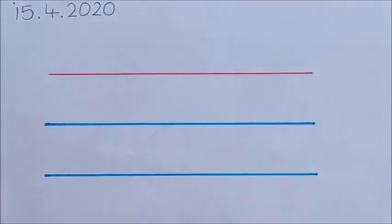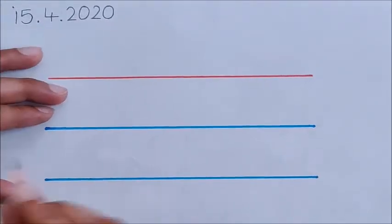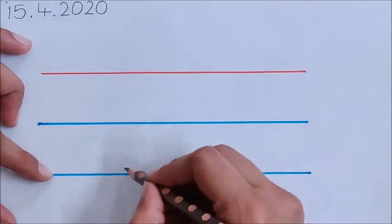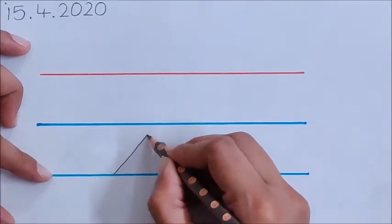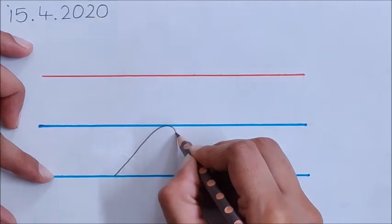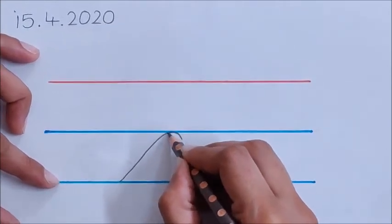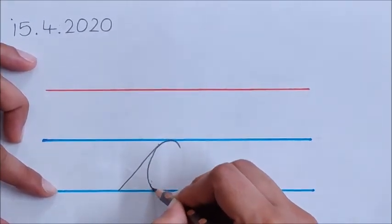Now let us see how to write letter QQ. From the lower blue line you will make a slanting line like this. Come down. Now come back on the same line. Touch the lower blue line.